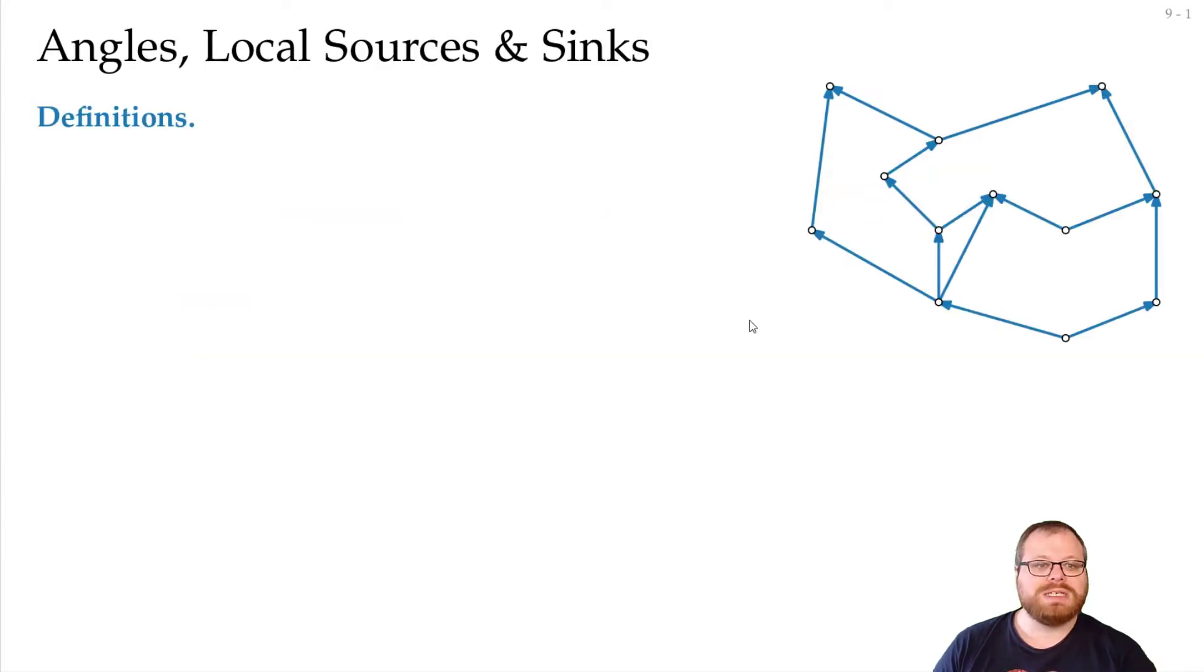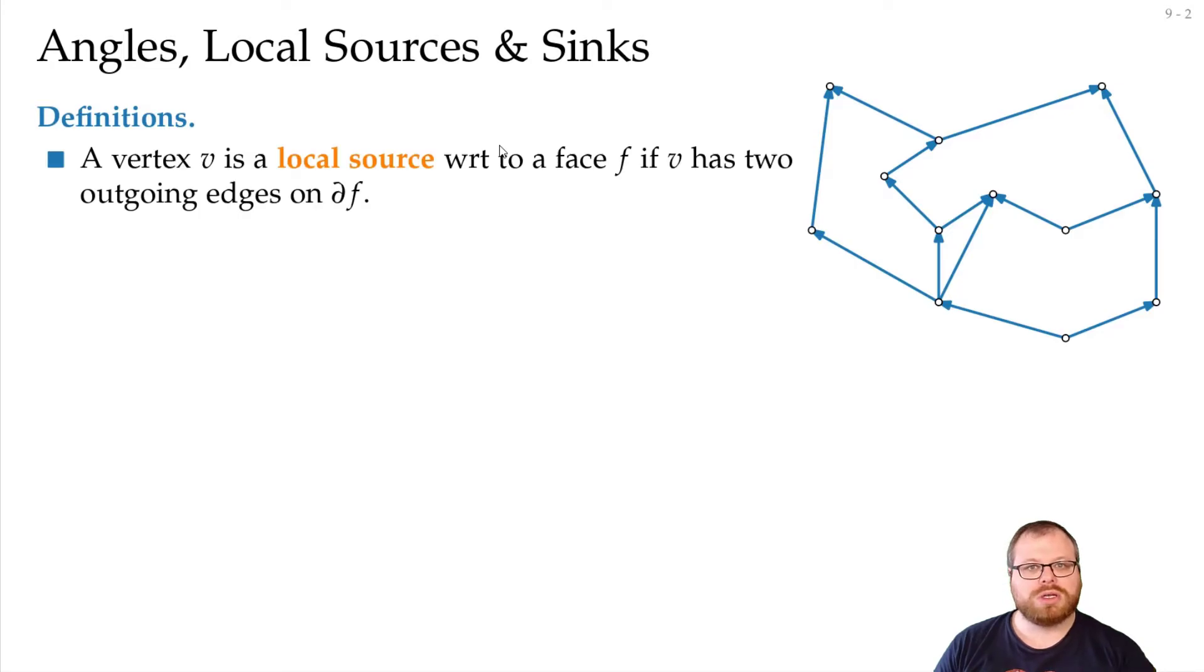Let's start with the first part. For that we need some more definitions. We already know what a global source or a global sink is. But there are also so-called local sources with regards to a face. So if I look at a single face, and a vertex only has outgoing edges inside this face, then it's a local source for that face.